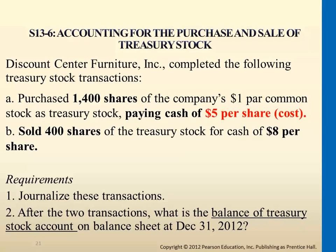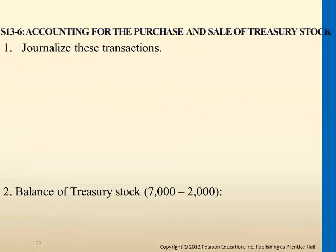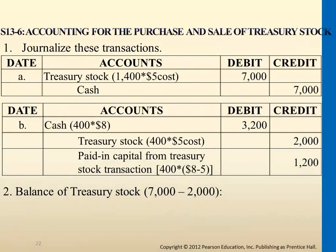In the first transaction, we have 1,400 shares that the company is buying back. It tells you par value is a dollar and the cost is $5. We'll be using the $5 to journalize. Buying back the stock is different from the original issuance — with original issuance, we compare market price with par value and figure out the excess. But when buying back stock, we're just reporting everything based on the cost we're actually paying out.